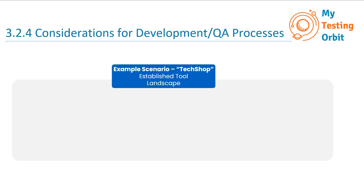For the TechShop example, your team uses several tools to manage the project and testing processes. For the project management tool, Jira is used for project management, tracking tasks, and managing project timelines for this specific project.